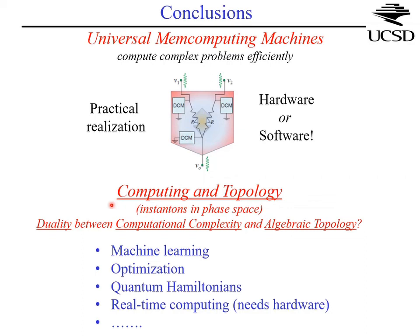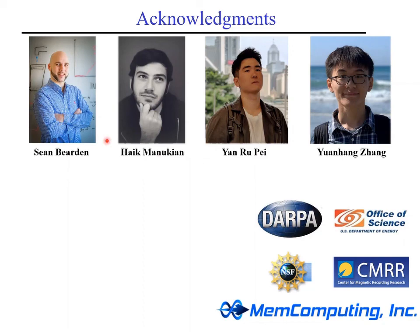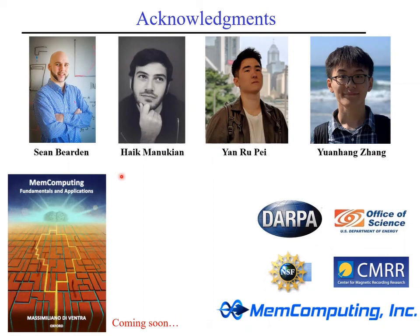I didn't discuss machine learning applications here — you can find our publications on that. We are also working on quantum Hamiltonians and see advantages there too. For real-time computing in cars, robots, and so forth, hardware realization is necessary, as software however fast cannot match real-time device-level computation. These are the students who worked on this paradigm: Sean, Hayek, Rudy, and Yuan Han. If you're interested, look up our papers or watch for the book from Oxford University Press. Thank you.